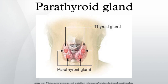In early human embryonic life, a series of six branchial pouches form that give rise to the human face, neck, and surrounding structures. The pouches are numbered such that the first pouch is the closest to the top of the embryo's head and the sixth is the furthest from it. The parathyroid glands originate from the interaction of the endoderm of the third and fourth pouch and neural crest mesenchyme.